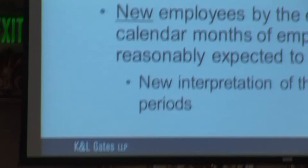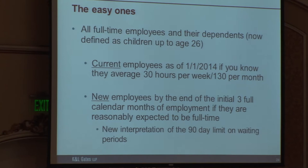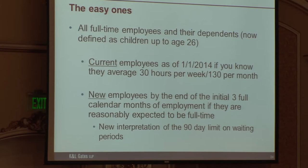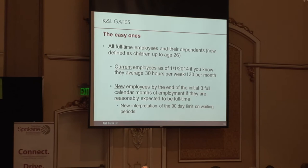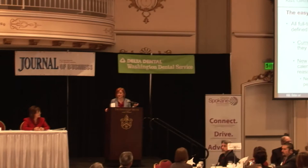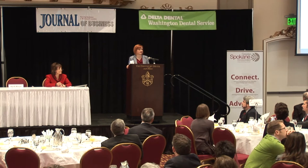The easy cases: provide coverage to anyone who is currently full-time or hired expecting to be full-time within 90 days of their hire date. You have to offer coverage for dependents, though there's no penalty for dependent coverage not being affordable — that's based on the employee-only premium. Note that dependents are defined in the regulations as children under age 26, and it does not include spouses. New employees can now have coverage start at the first of the month after the first three full months of hire.